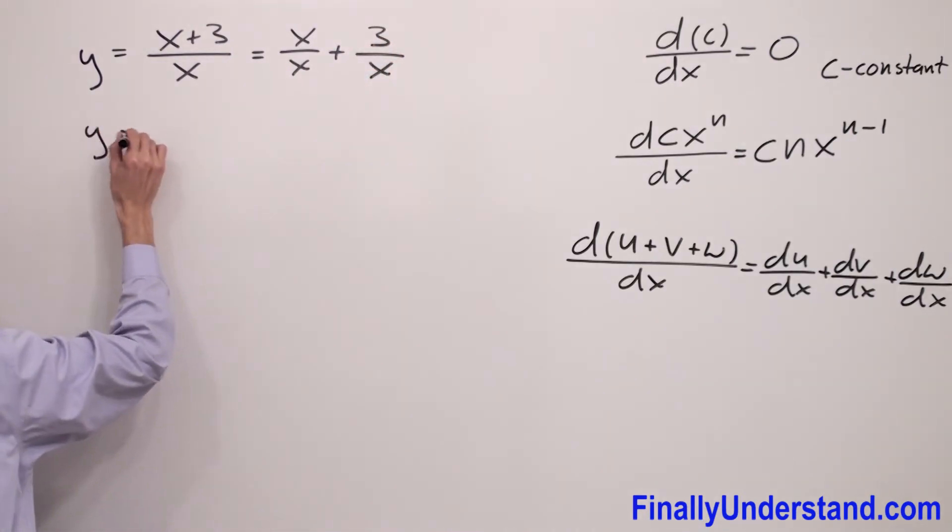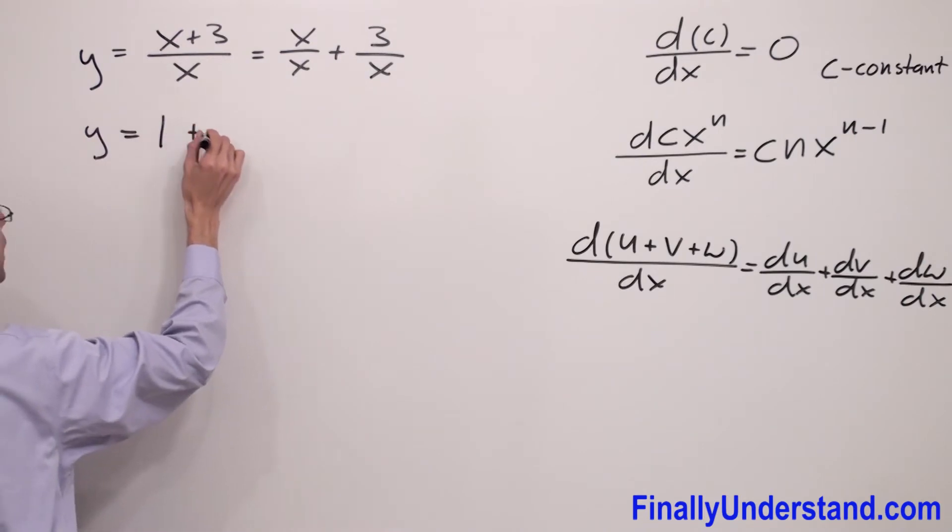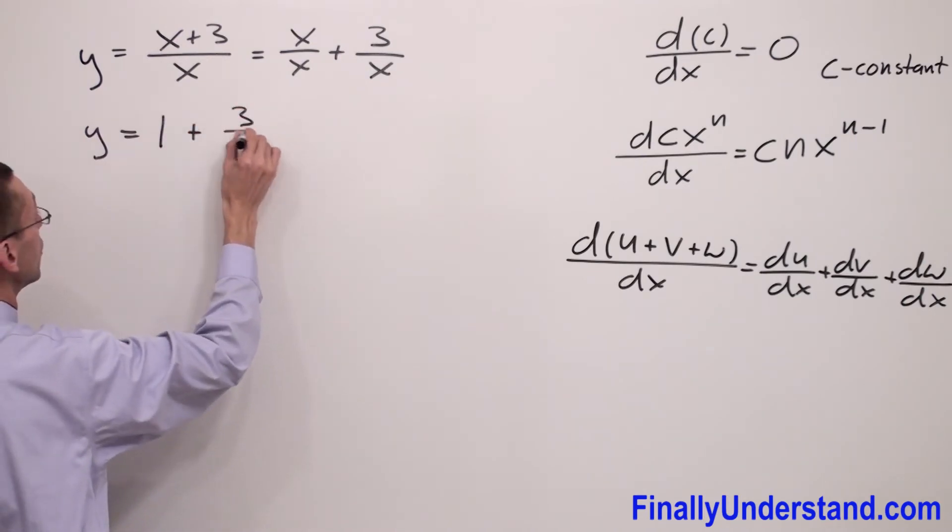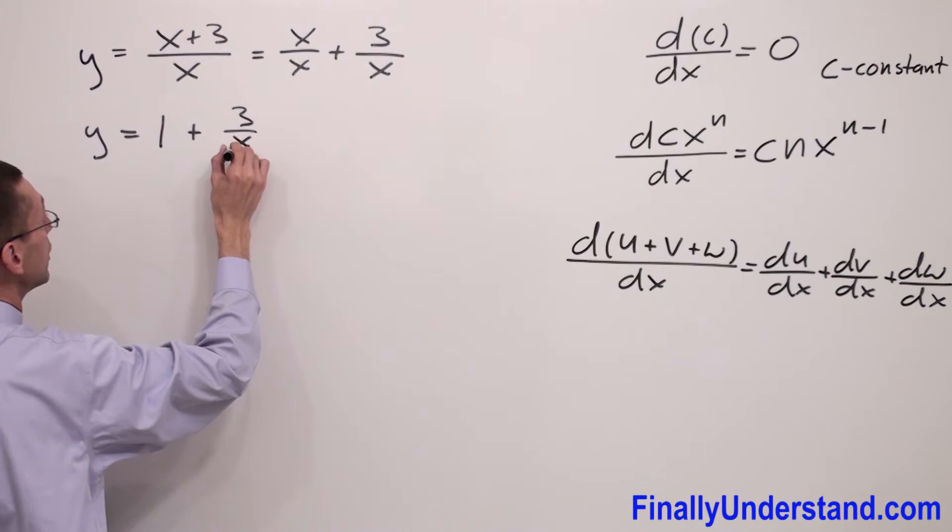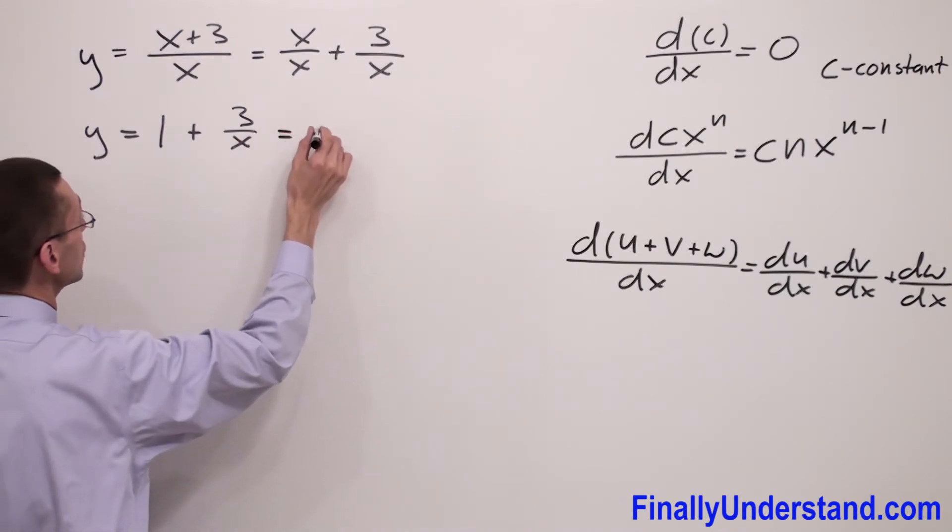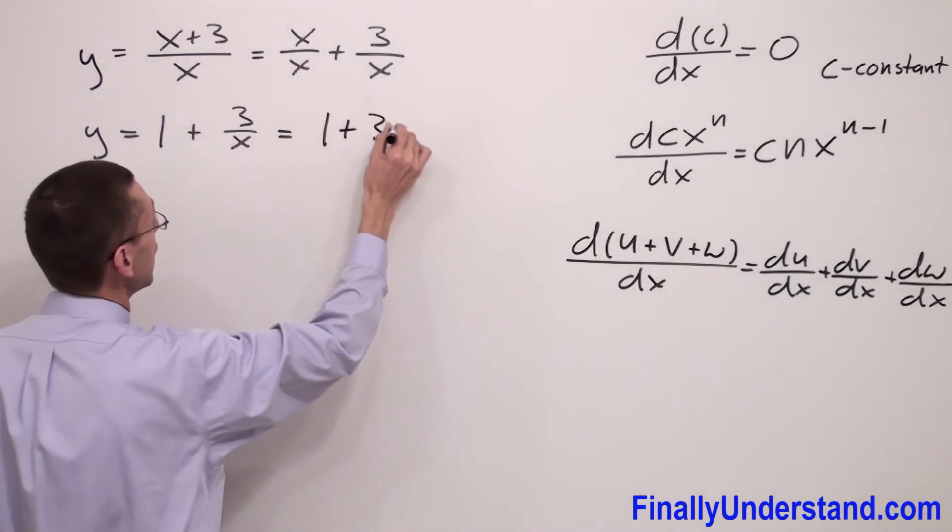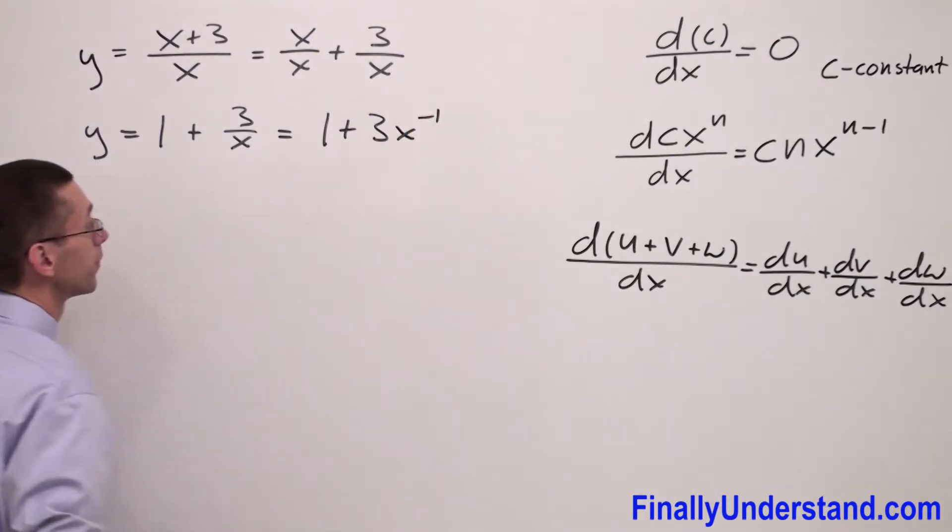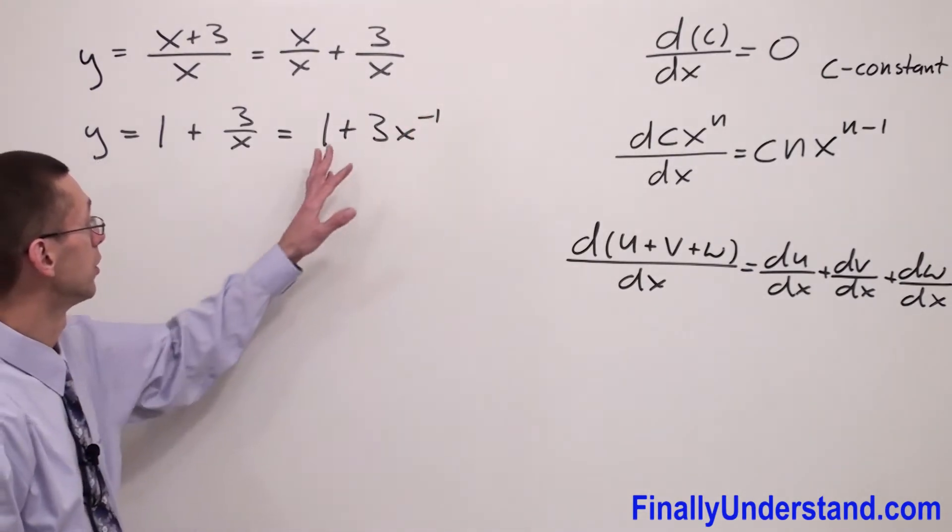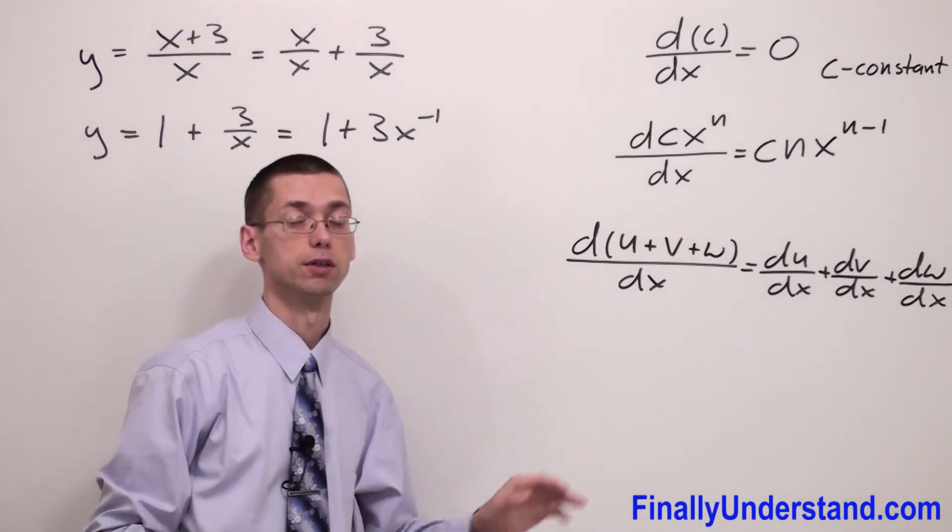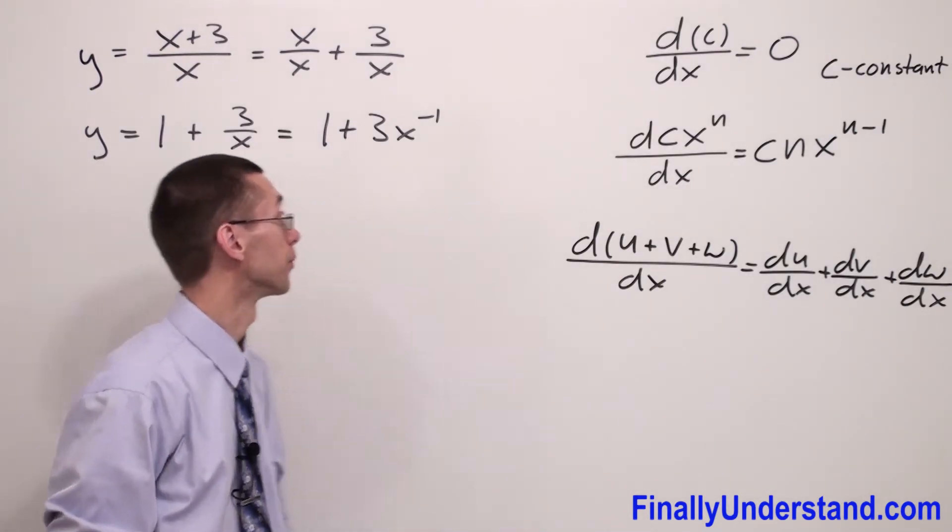And say that this is equal to 1 plus 3 over x, right. And we can say that this is 1 plus 3x to negative 1. So next I can use the formula for the derivative of a sum because I have a sum.